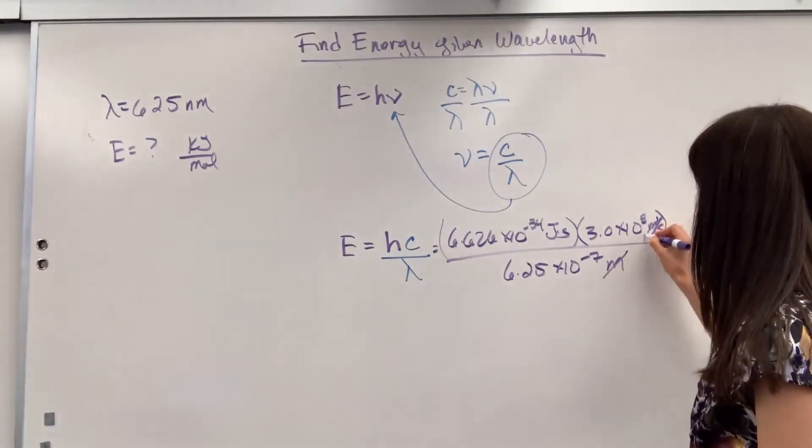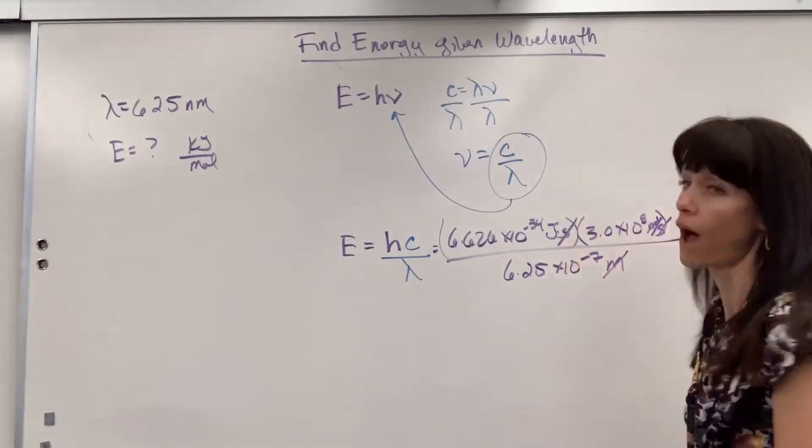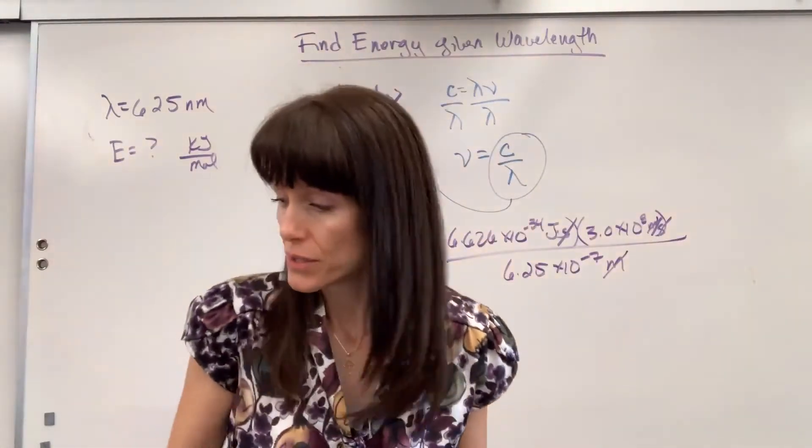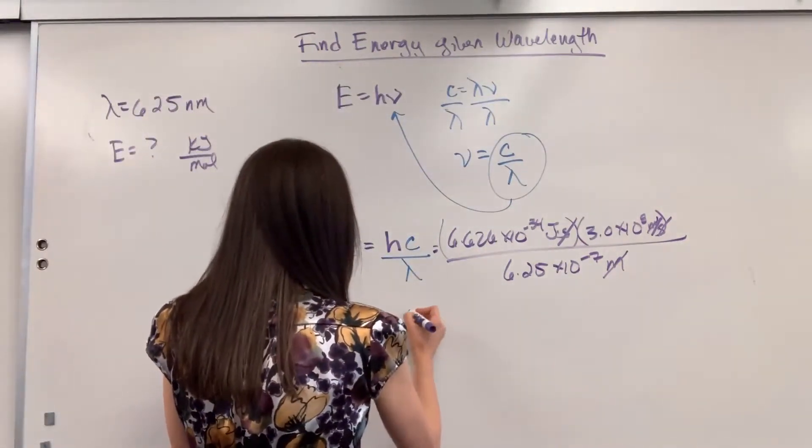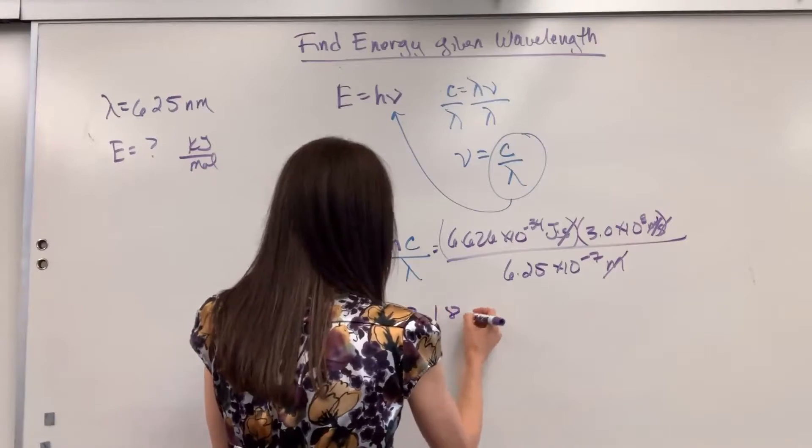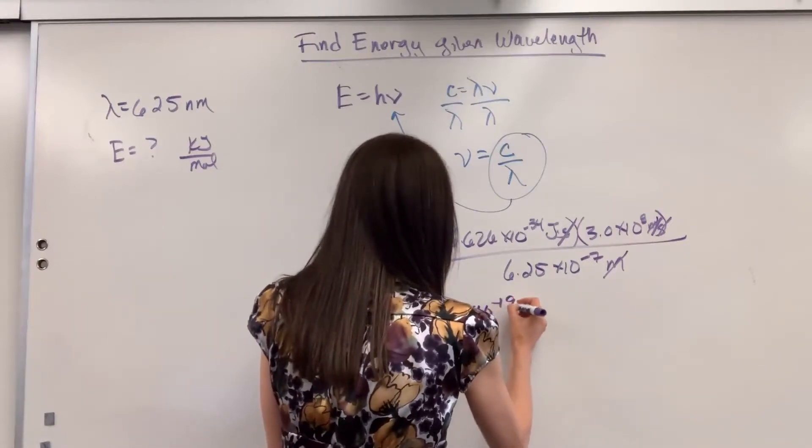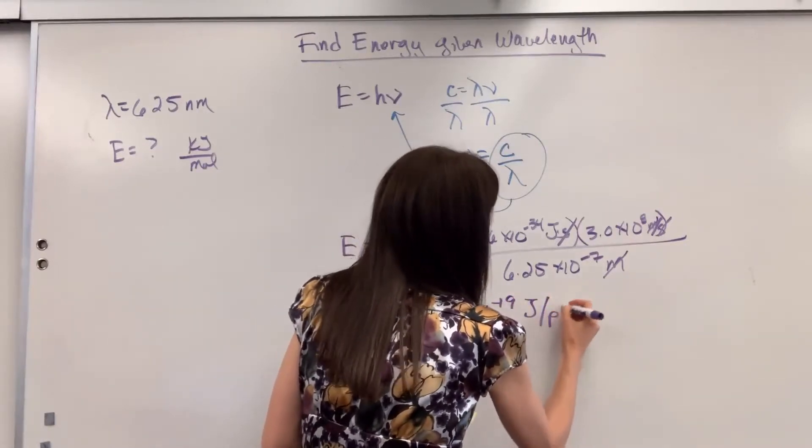Meters cancels, seconds cancel. Oh, we are left with joules. So this will give us energy equals 3.18 times 10 to the minus 19 joule per photon.